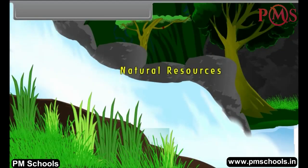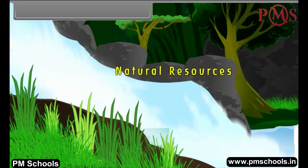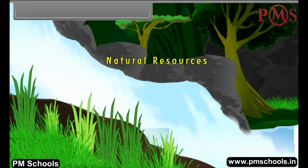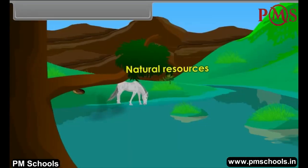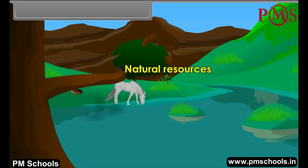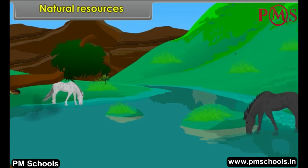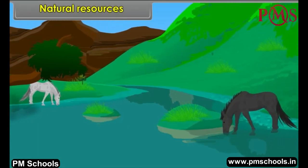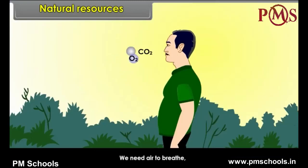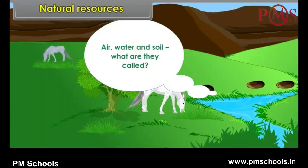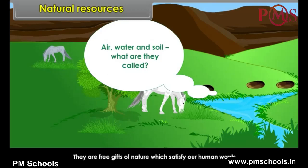Let us start the chapter by explaining the term natural resource briefly with suitable examples. We need air to breathe, water to drink, and soil to grow crops. Air, water, and soil are free gifts of nature which satisfy our human wants.